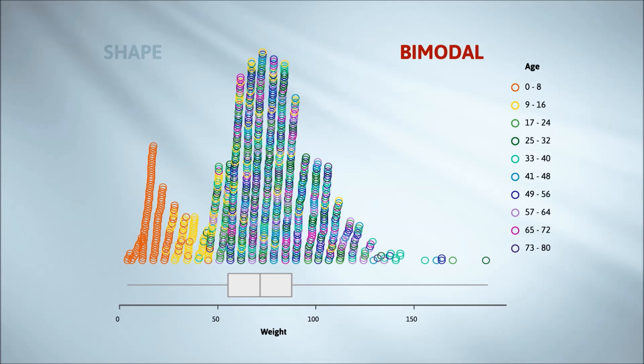Here I've colored the individual points by their age. See how the colors relate to age. The younger ages are the oranges and yellows, and the older ages are the blues and purples. The lower mountain has the orange then yellow shades. It's made up of the children and teenagers.